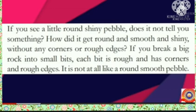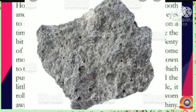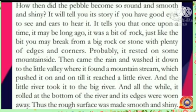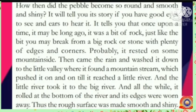Nehru explained to his daughter about how the bubble became smooth and shiny. Once upon a time, the bubble was a bit of rock just like with plenty of edges and corners. Then it rested on the mountain side, and the rain washed it down to the little valley where it found a mountain stream which pushed it on to a little river. From there it reached a big river, and all the while it rolled at the bottom of the river. Its edges were worn away, and thus the rough surface was made smooth and shiny.